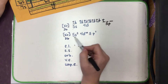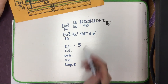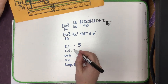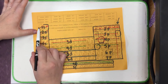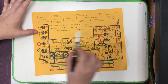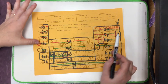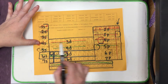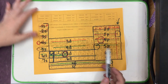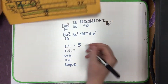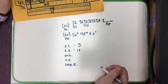Subshells are like rooms, so we can count those on the periodic table. Counting through the periodic table, indium is in the 11th room, so there are 11 subshells.